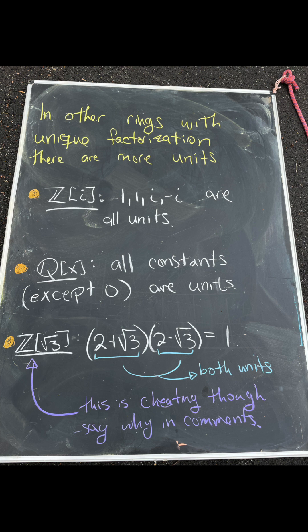Then if we take the polynomial ring with rational coefficients, that also has a factorization rule like the integers, and it turns out that all constant polynomials, except 0, are units.